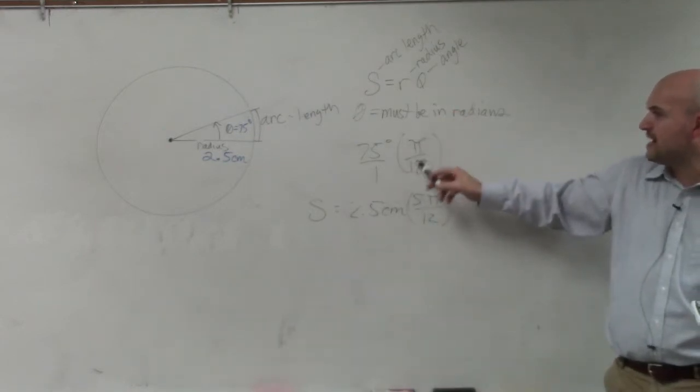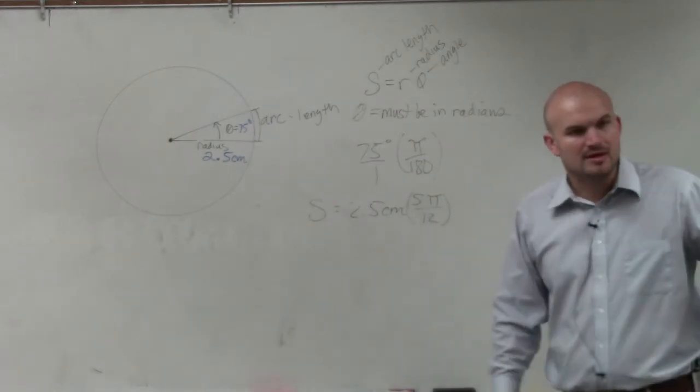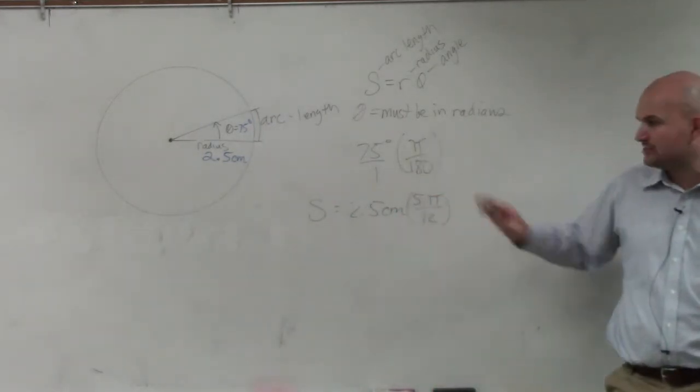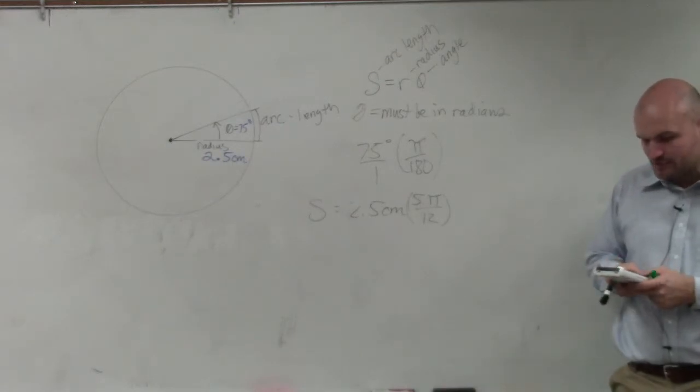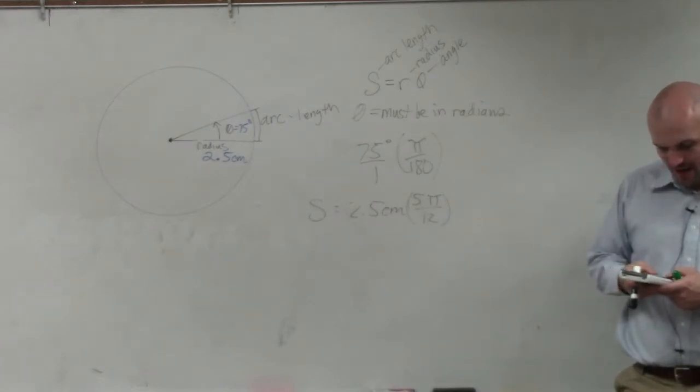I'm not going to do 75 pi over 180 and then round it. You could, as long as you're using the same number. But if you're using a different calculator, my recommendation would just be to keep the pi until the very end. Then all I'm doing is 2.5 times 5 times pi and then divided by 12.